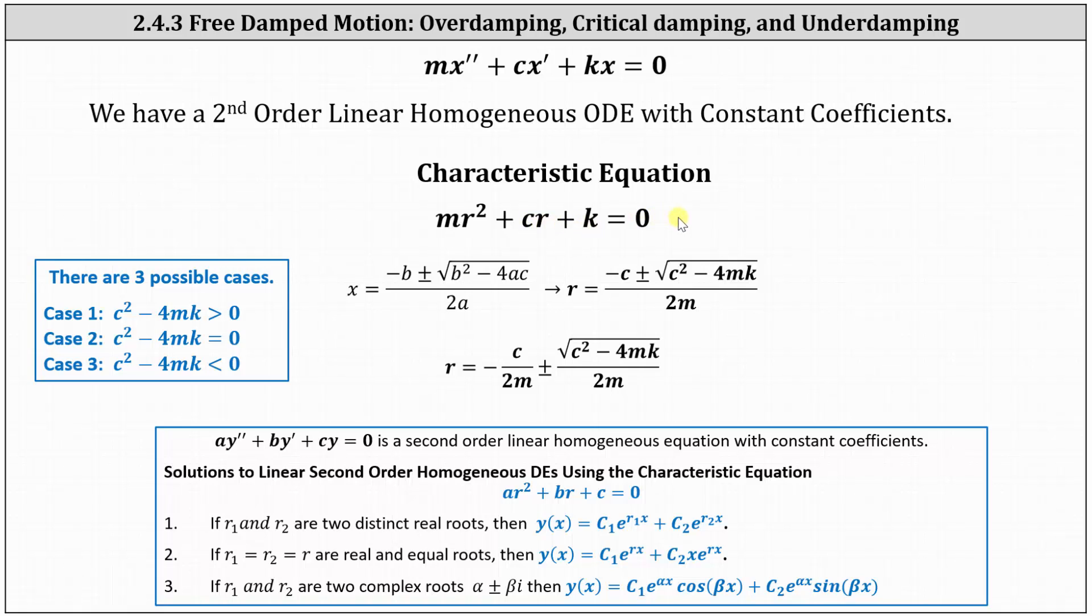Determining the roots using the quadratic formula, where r is the variable, a is the coefficient of r squared, b is the coefficient of r, and c is the constant, this gives us r equals negative c plus or minus the square root of c squared minus 4mk all divided by 2m, which we can also write as two parts as shown below.